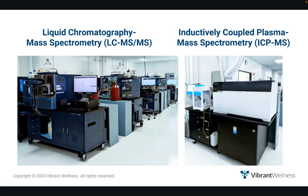Vibrant's micronutrient test uses multiple methodologies, including the gold standard of ICP-MS for metals and minerals, and liquid chromatography with tandem mass spectrometry — LC-MS-MS — for quantitative detection of most intracellular and extracellular serum micronutrient markers. These are powerful analytical techniques that combine the separating power of ICP and LC with the highly sensitive and selective mass analysis capability of triple-quadrupole mass spectrometry.